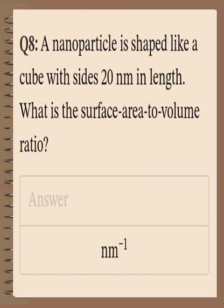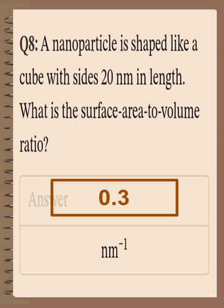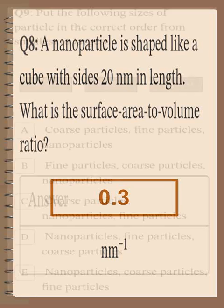Question number eight: A nanoparticle is shaped like a cube with a side length of 20 nanometers. What is the surface area to volume ratio? Volume = 20 × 20 × 20 = 8,000 nm³. Surface area of a cube = 6 × (20²) = 2,400 nm². Therefore the surface area to volume ratio = 2,400 ÷ 8,000 = 0.3 nm⁻¹.